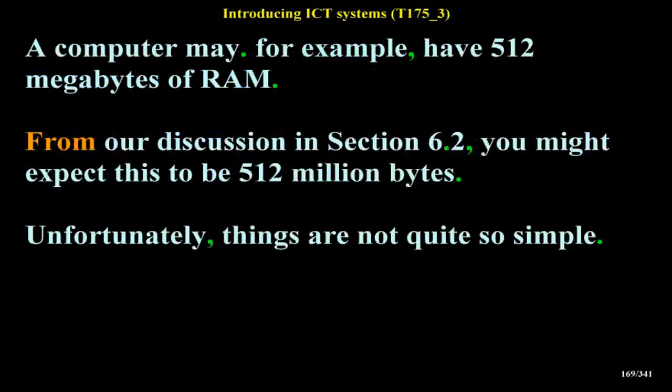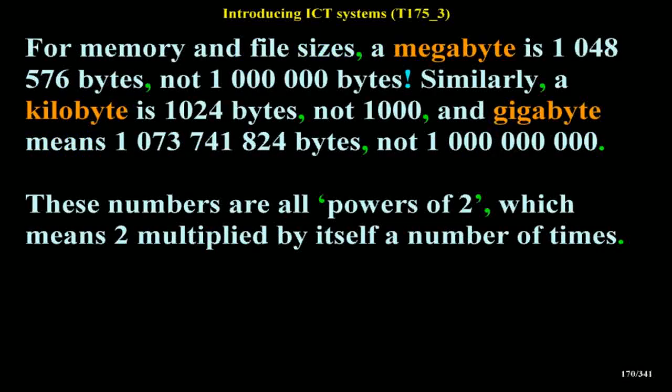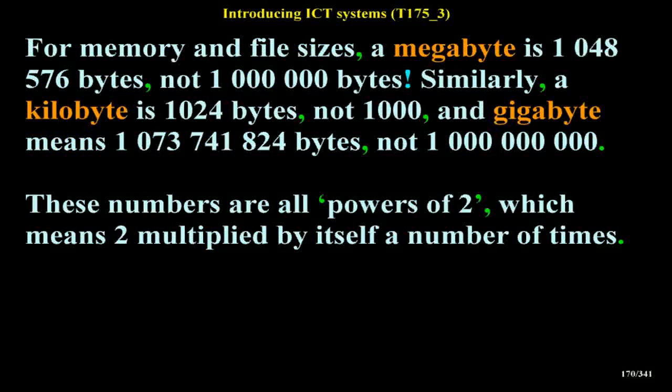Unfortunately, things are not quite so simple. For memory and file sizes, a megabyte is 1,048,576 bytes, not 1,000,000. Similarly, a kilobyte is 1,024 bytes, not 1,000, and a gigabyte means 1,073,741,824 bytes, not 1,000,000,000.